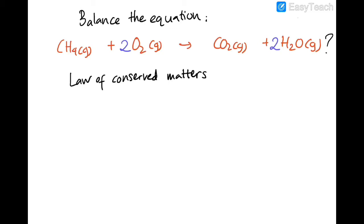To summarize: you have the reactants and products written in the right phase, and the number of each atom on the product side must equal the number on the reactant side — each atom must be the same for both sides. To balance an equation, you take each atom and try to make them equal. Sometimes it's trial and error, but the more you practice, the more familiar you become and the better you'll be at balancing equations.